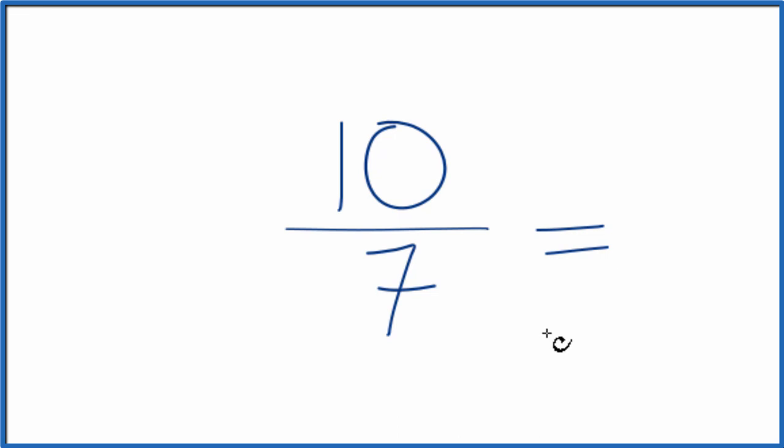To do that, we need to find a common factor, something that goes in both 10 and 7. But when I look at 10 and 7, the only factor that goes into both 10 and 7 is 1.